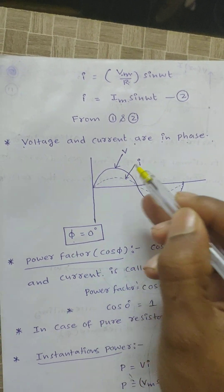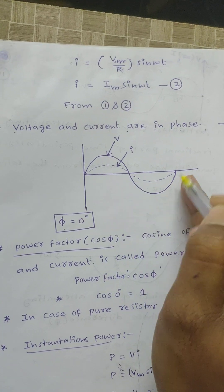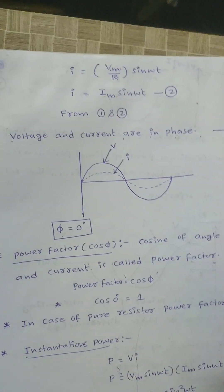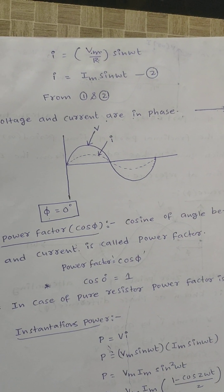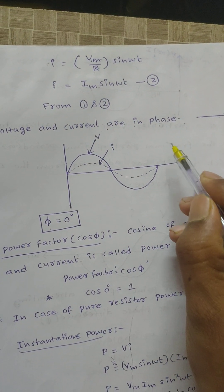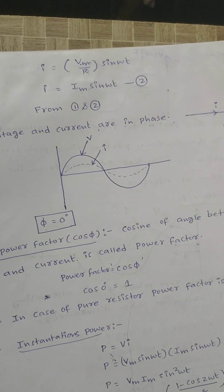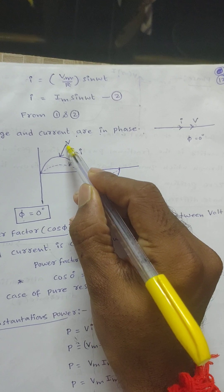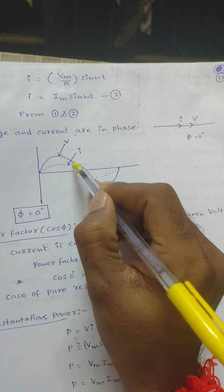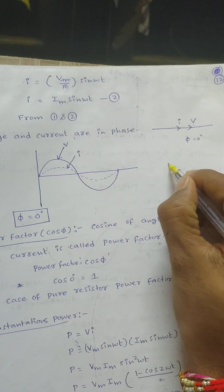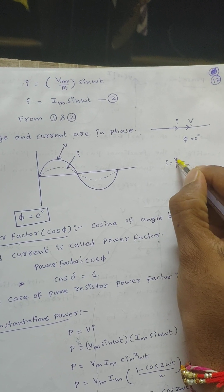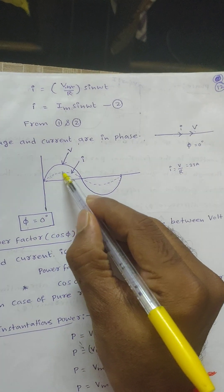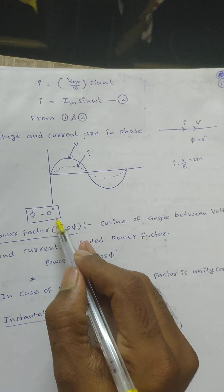If we draw the waveform, the magnitude of voltage is greater than the magnitude of current. This is because I = V/R. For example, if AC voltage is 230 volts and resistance is 10 ohms, then current magnitude will be 23 amperes. Voltage and current are both in phase, and phi equals 0 degrees.